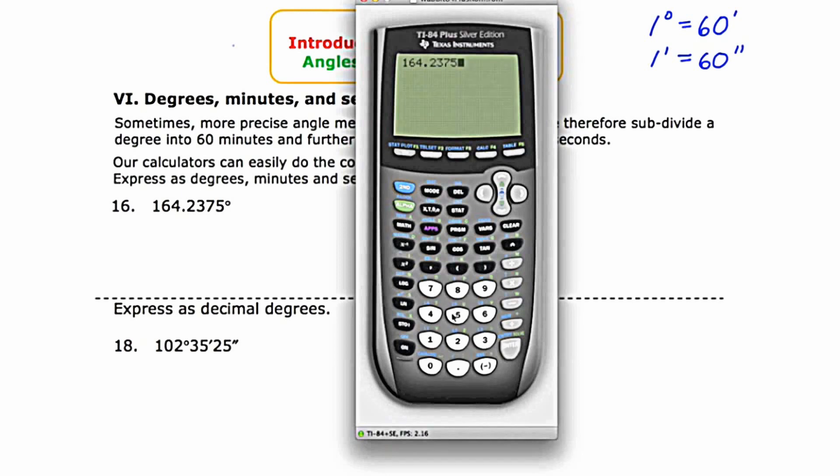There's a menu that deals with these conversions. To get to that menu, you're going to press second, and then the button that has apps on it. You'll notice above it there's the word angle. If you look at option four, there's a little arrow that says convert to DMS, or convert to degrees, minutes, and seconds. So I'm going to select option four.